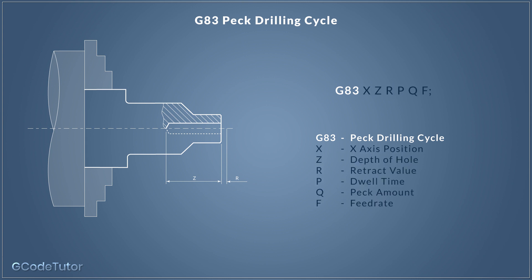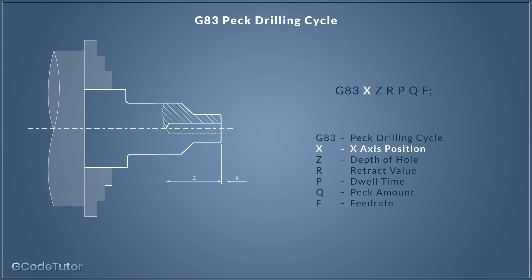The first line of our peck drilling cycle is G83. This is the G-code — it tells the machine we're going to start peck drilling and sets the standard for the rest of the line of code. Like the other cycles, we have our X-axis drilling position. This is the centerline of the part, so if we're drilling a centerline hole, this would normally be X 0.0. Next we have Z, the depth of our hole — this is the final drilling depth we wish to achieve.